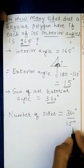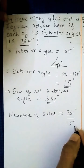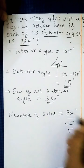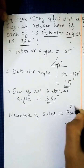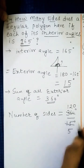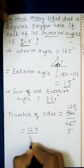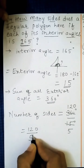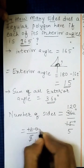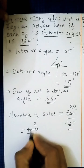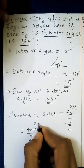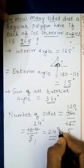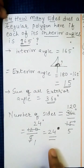We apply the formula: number of sides equals 360 degrees divided by 15 degrees. We start cancellation using the table of 3: 360 divided by 15 gives us 120 upon 5. Then cancelling again, 120 divided by 5 gives us 24. So 24 is our number of sides.